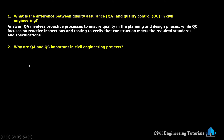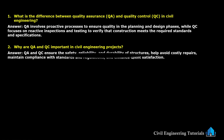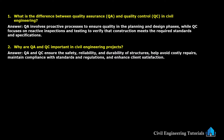Why are quality assurance (QA) and quality control (QC) important in civil engineering projects? QA and QC ensure the safety, reliability and durability of structures, help avoid costly repairs, maintain compliance with standards and regulations, and enhance client satisfaction.